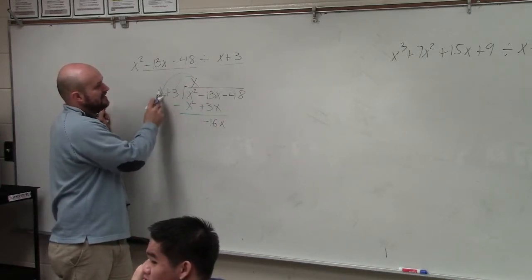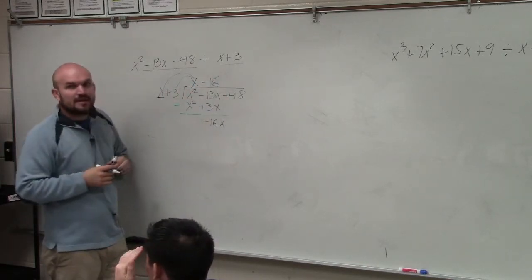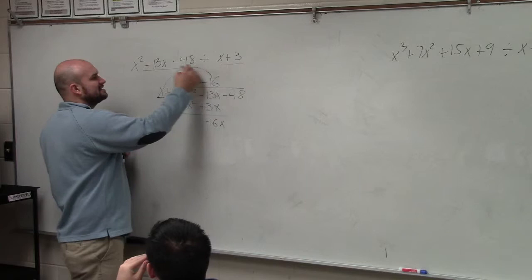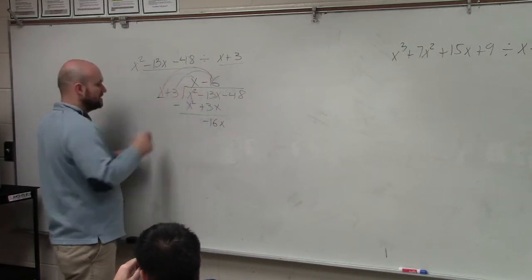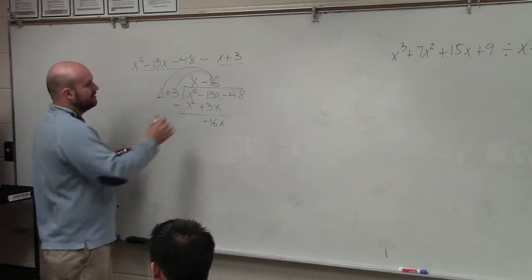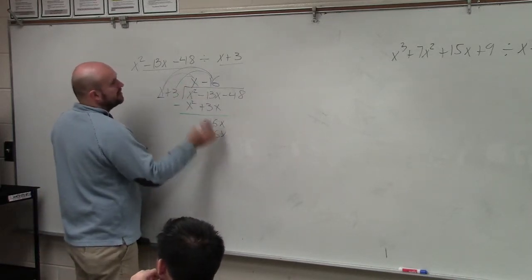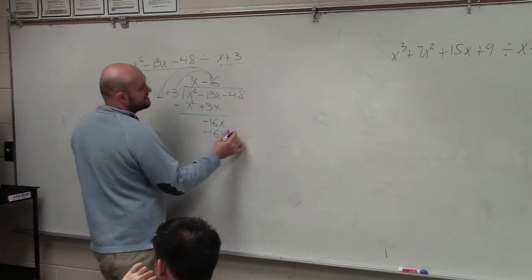So then we just do this again. x divides into -16x a -16 times. Then we follow again the process. Multiply -16 times here. Multiply -16 times here. So therefore, what we obtain is -16 times x is -16x.